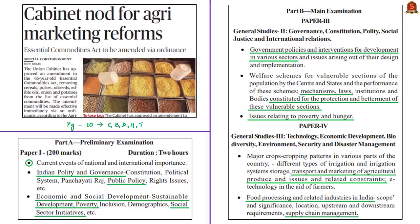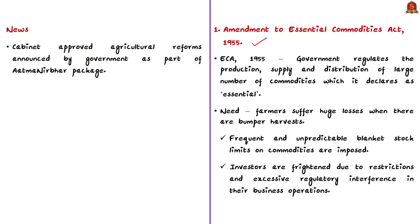This news article talks about cabinet approval for agriculture reforms announced as part of the Atmanirbhar package. Know that the Essential Commodities Act of 1955 was enacted to ensure easy availability of essential commodities to consumers and to protect consumers from exploitation by unscrupulous traders. The government uses this Act to regulate the production, supply and distribution of a large number of commodities and can declare them essential so they are available at fair prices.